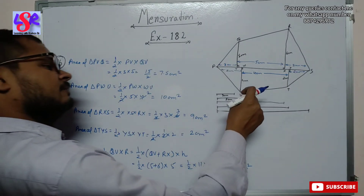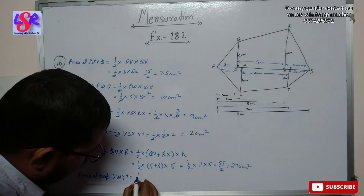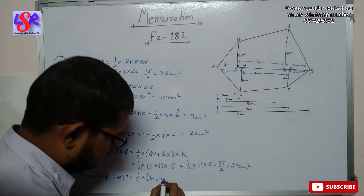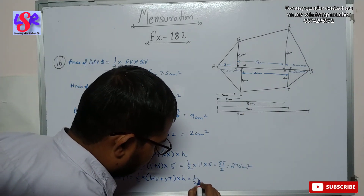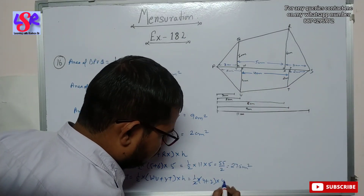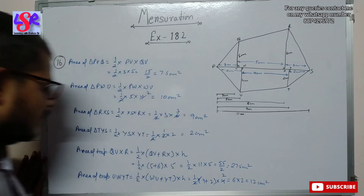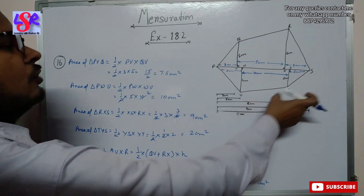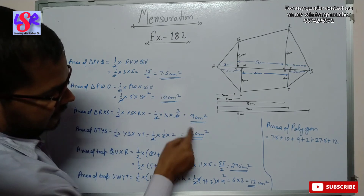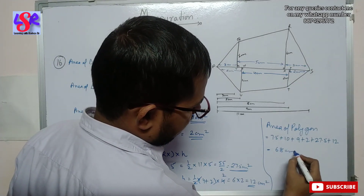The area of trapezium UWYT equals 1/2 into (WU plus YT) into height, which is 1/2 into (4 plus 2) into 4. The 2 cancels to give 6 into 2 equals 12 square centimeters. Adding all six areas: area of polygon equals 7.5 plus 10 plus 9 plus 2 plus 27.5 plus 12, which equals 68 square centimeters as the answer.